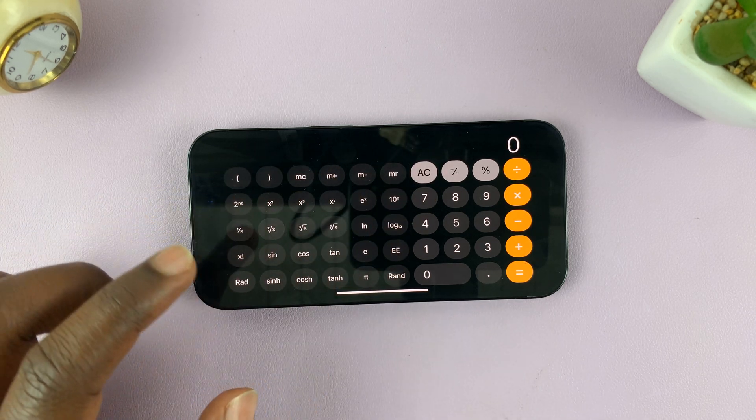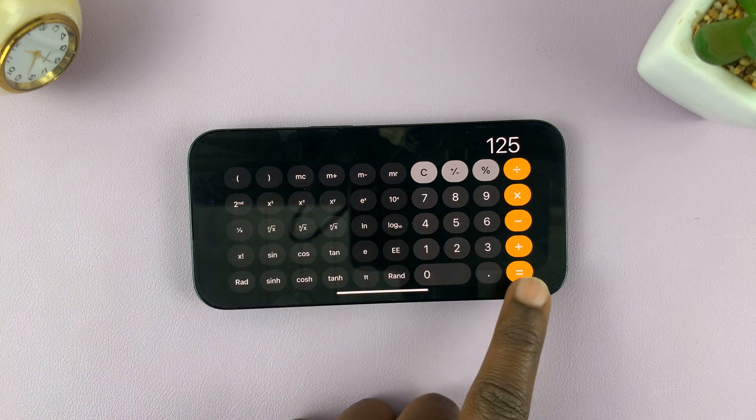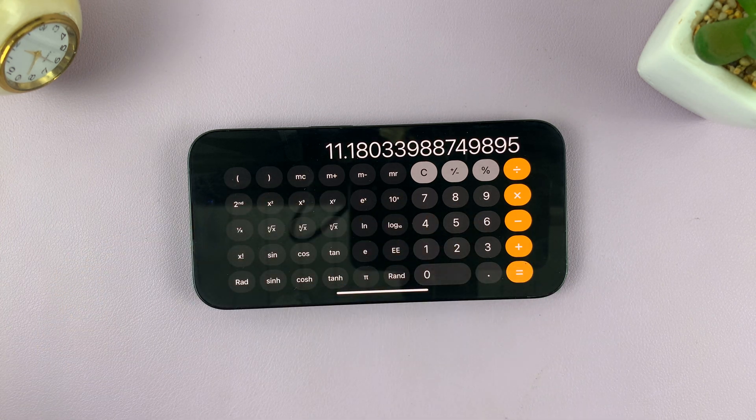So square root of 125, for instance, equals that, and that's about it.